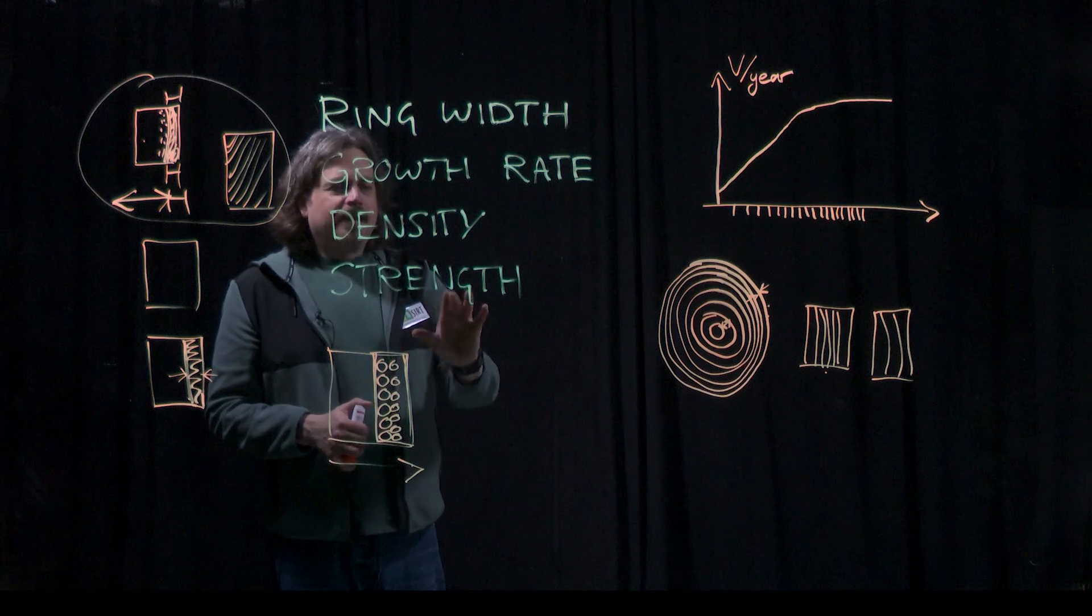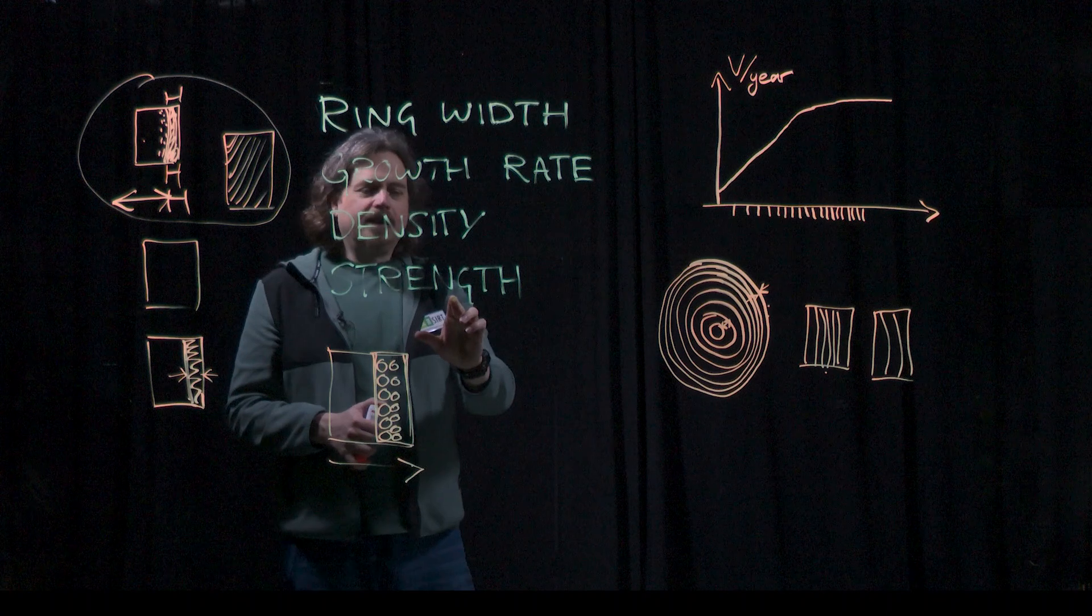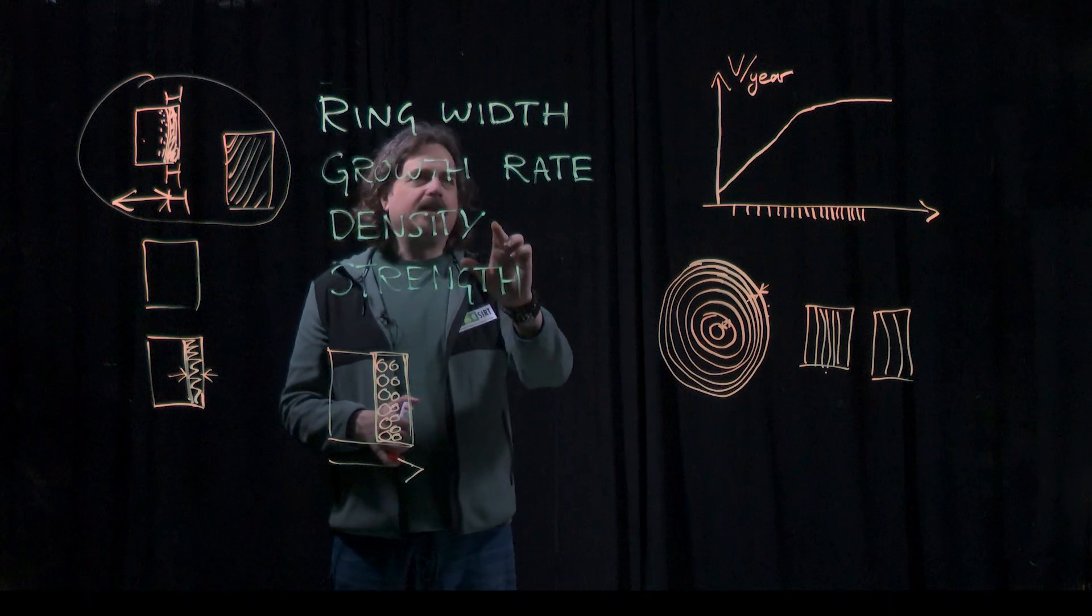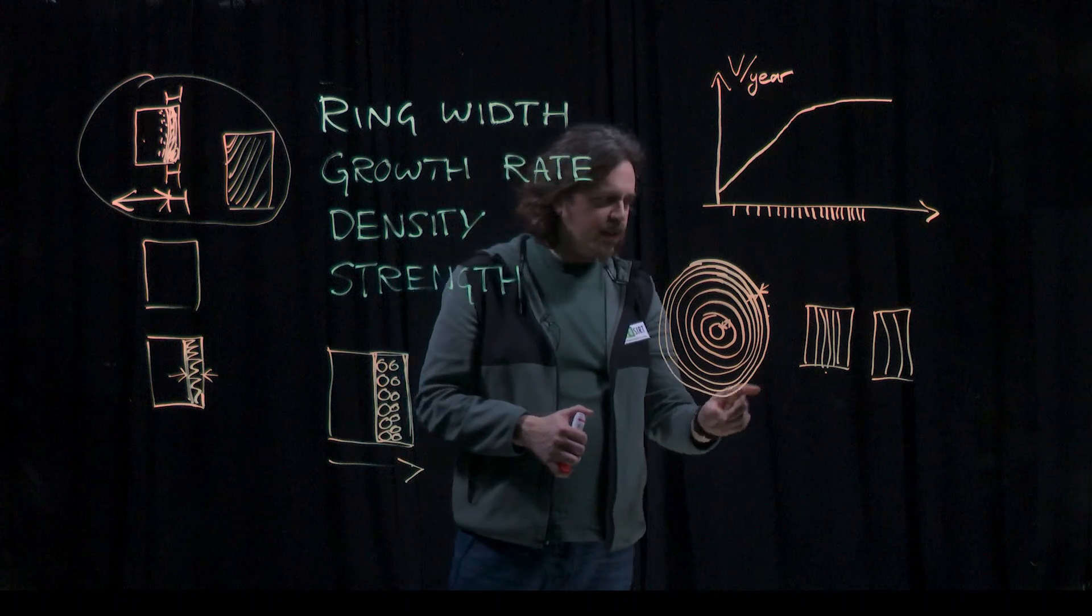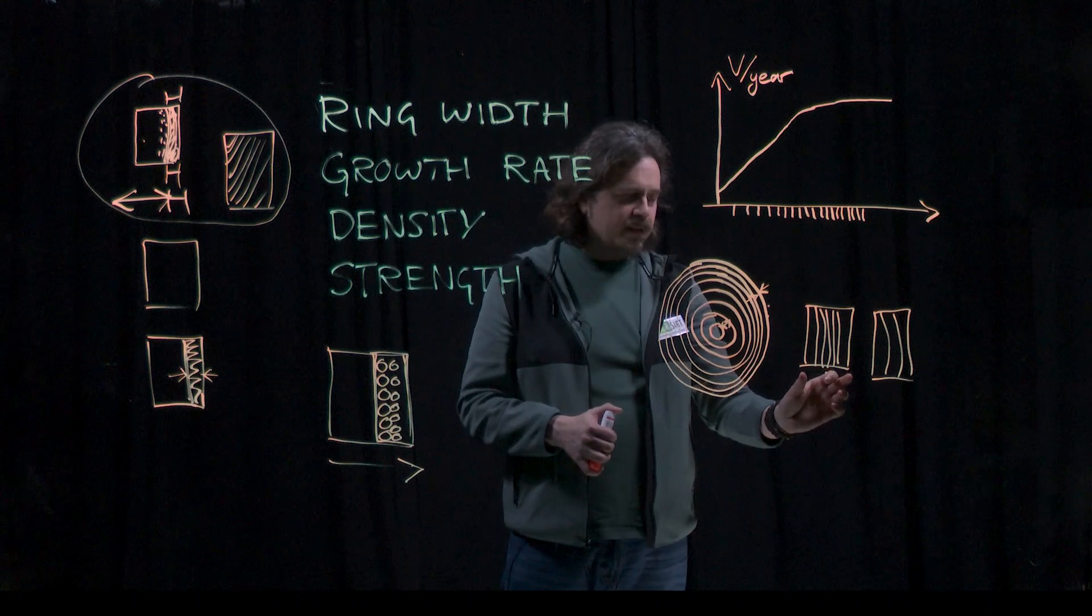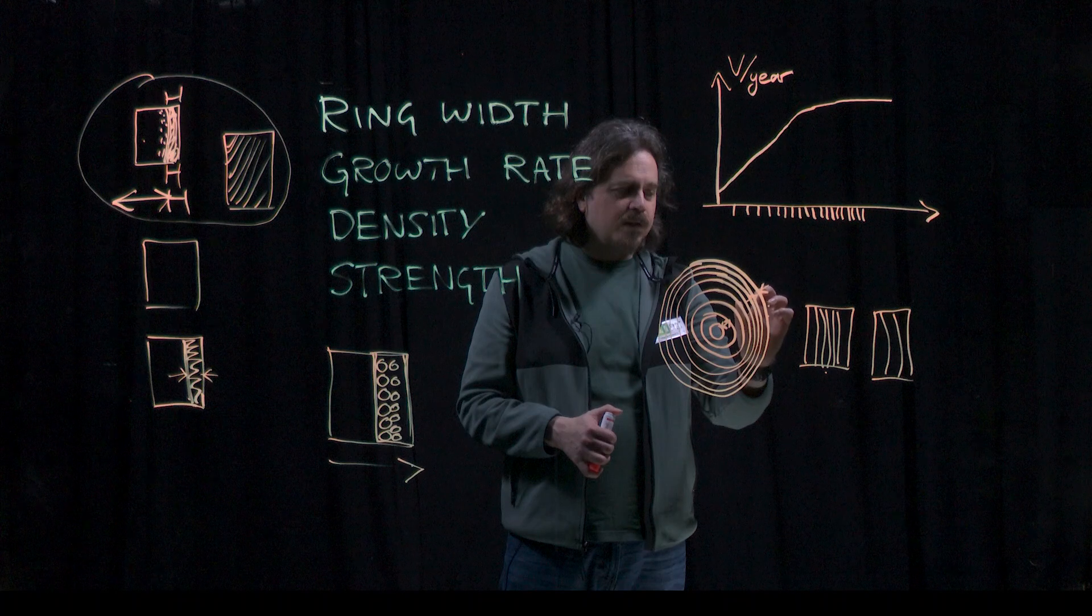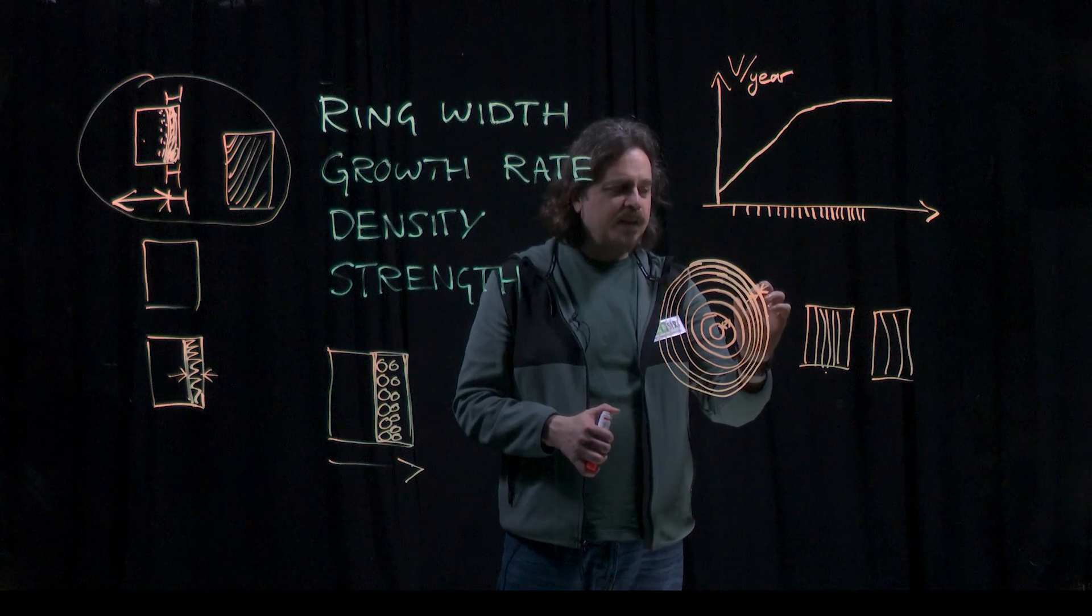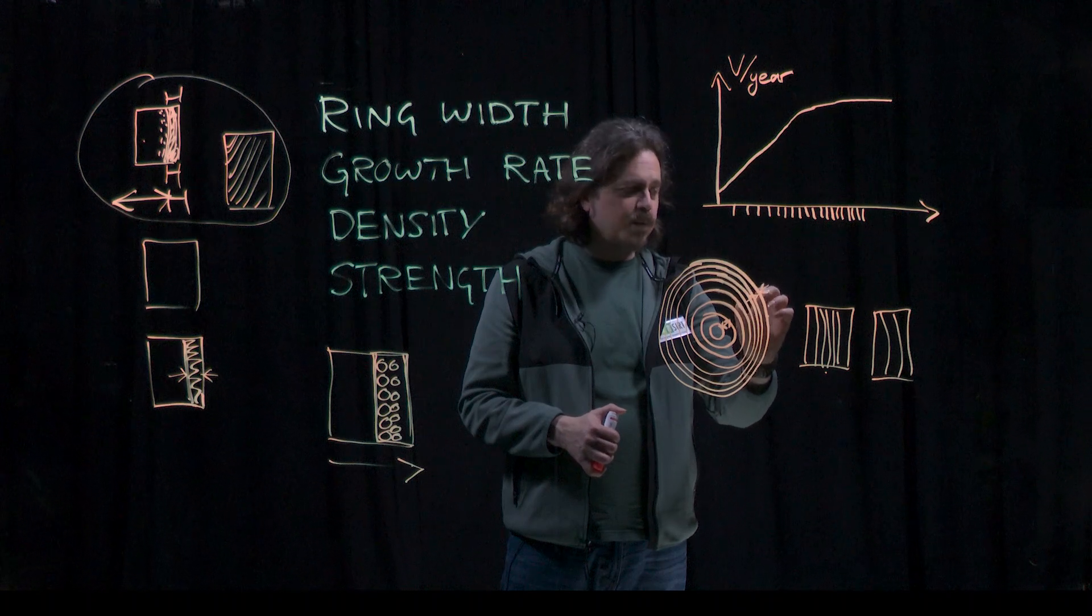So strength and density. One reason that you might see a link between strength, density and ring width is because of the radial trend in wood properties that you see in softwoods. So if you have a piece with narrow rings, that's an indication that it might be coming from the outer part of the log. And in most softwoods, as the tree gets older, it grows stronger, stiffer and denser wood.